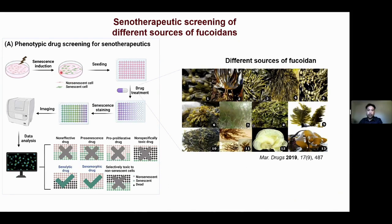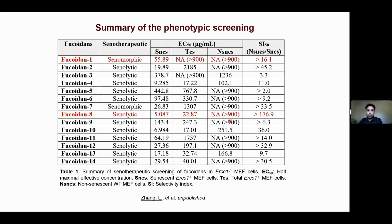In this workflow, mouse and human cells are induced into senescence under oxidative or genotoxic stress. After drug treatment, cells are stained for characteristic SA-β-gal activity, then imaged and analyzed by a high-content imaging system. Both senomorphics and senolytics can be identified using this platform. We screened different libraries of natural products such as flavonoids, fatty acids, and polysaccharides, and found that some sources of fucoidin are senolytics and some are senomorphics.